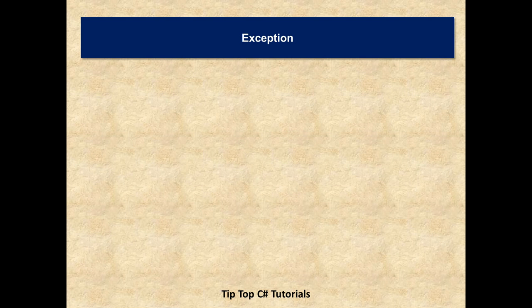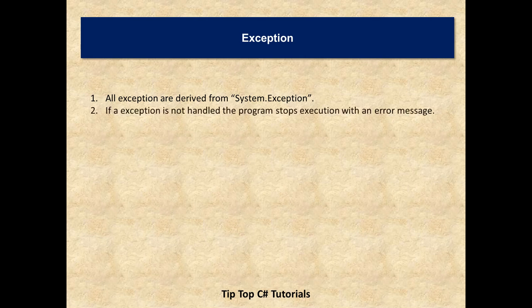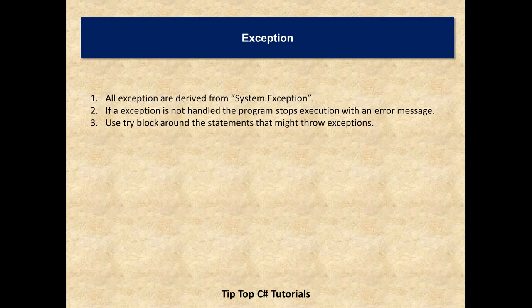Some important points to remember while handling exceptions: all exceptions are derived from the System.Exception type. If an exception is not handled in the program, the program stops execution with an error message or closes abruptly. So if there is any kind of exception, it's better to handle it. Use a try block around statements that might throw an exception.